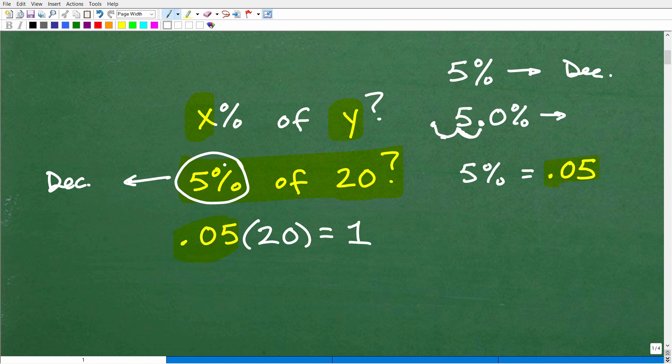So the solution is once we change the percent to a decimal, and of course, 5% is a decimal 0.05. We multiply by the number we're trying to find the answer of, right? 5% of 20, so it's 0.05 times 20. That, in fact, is 1.